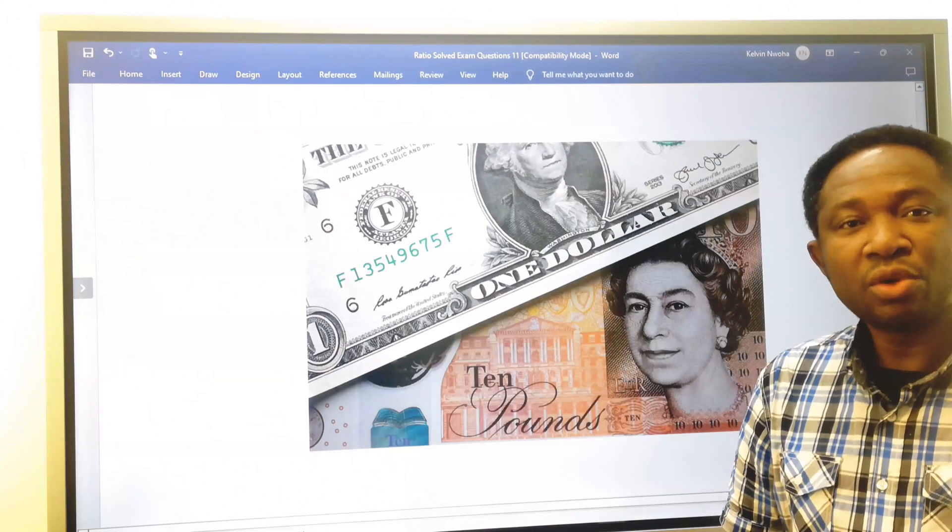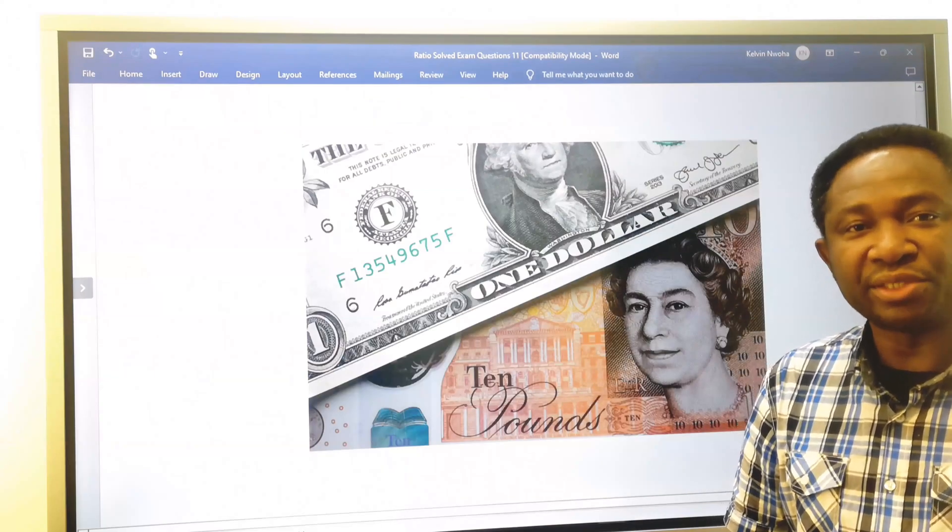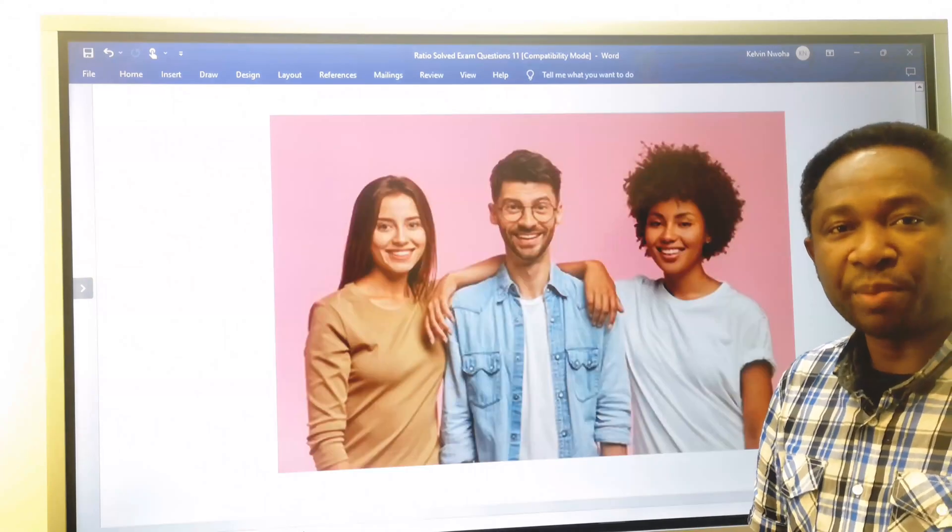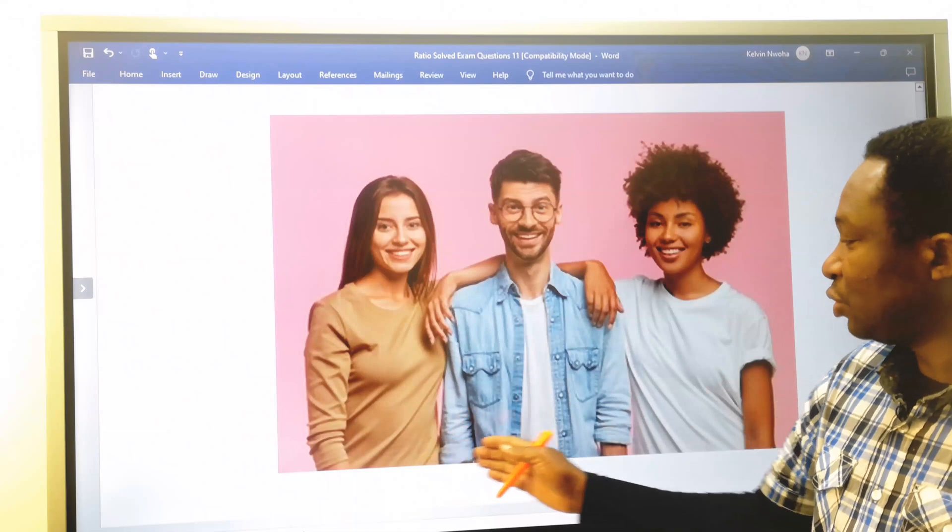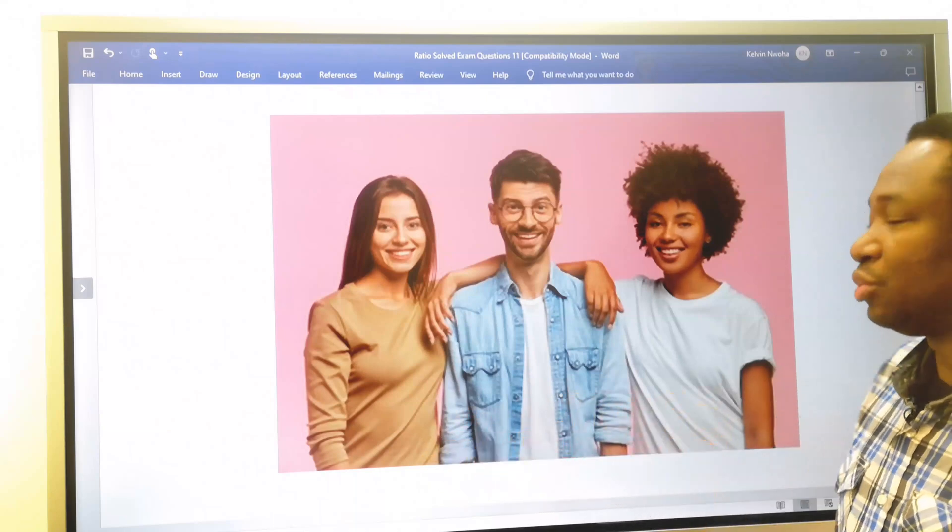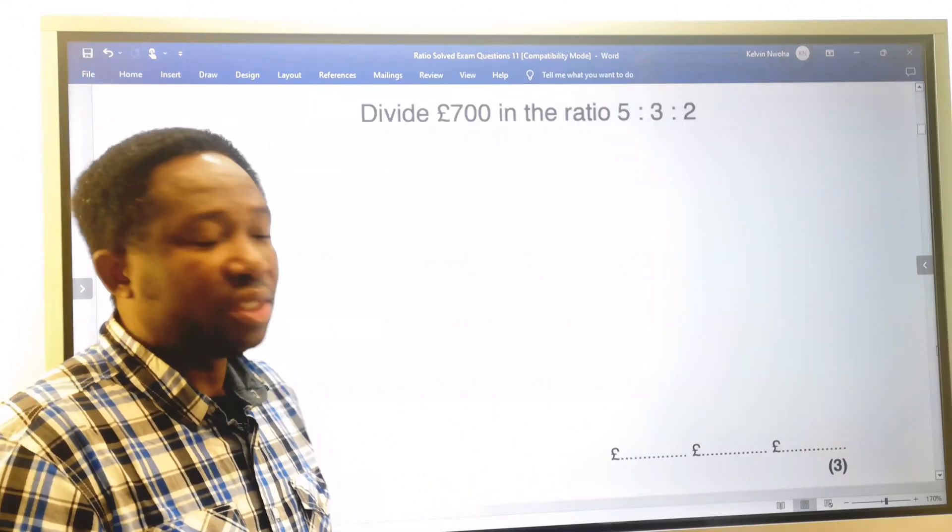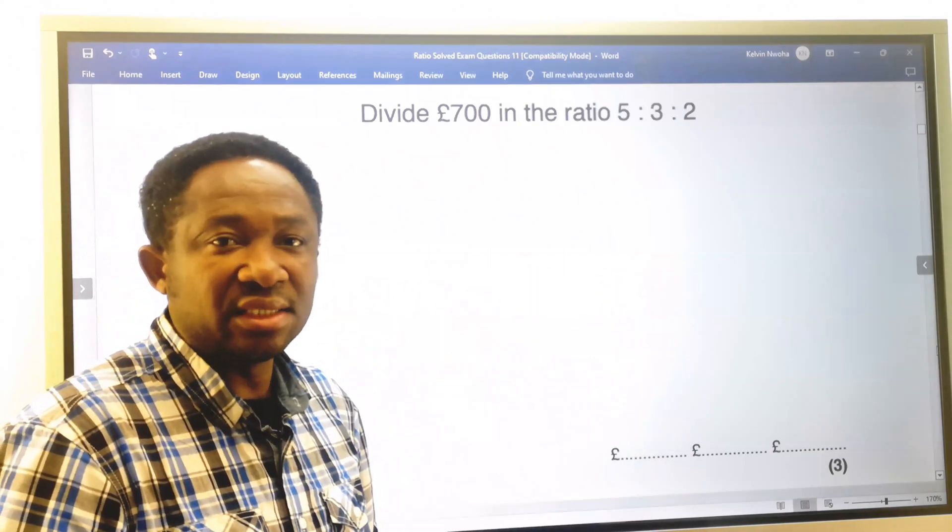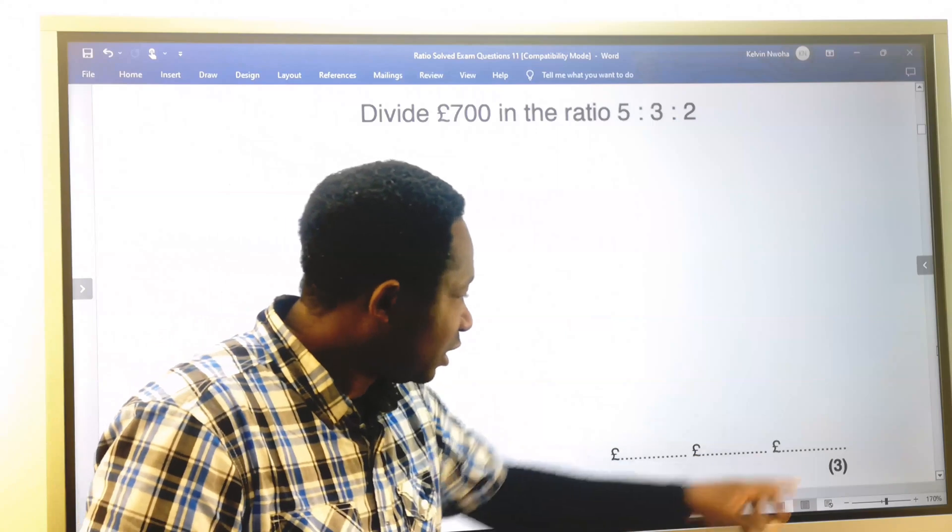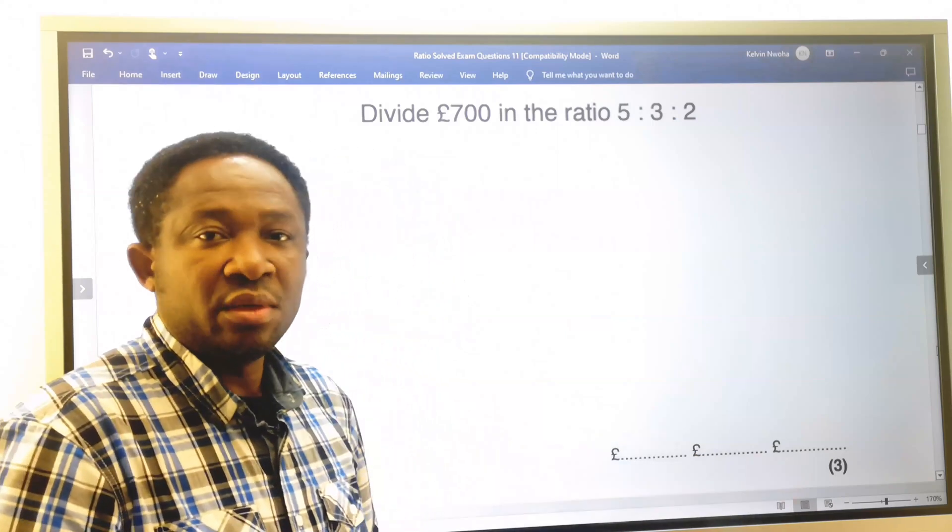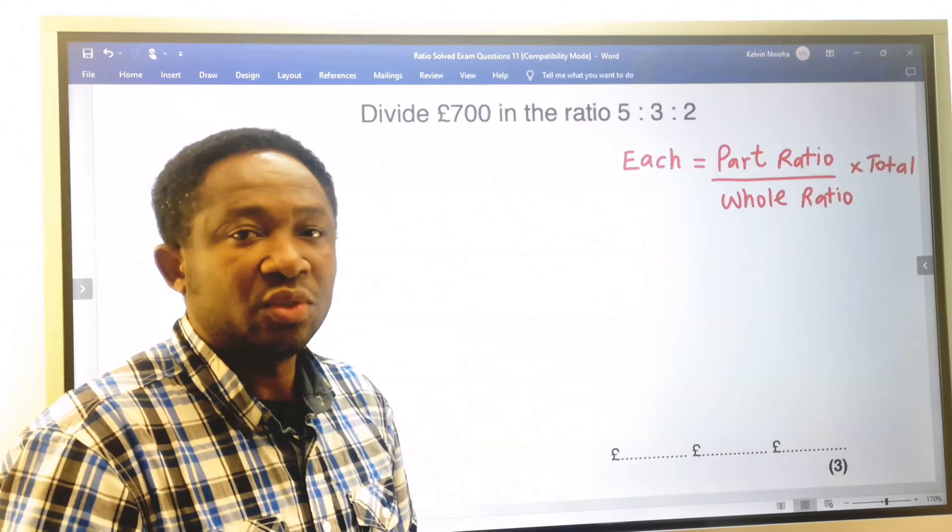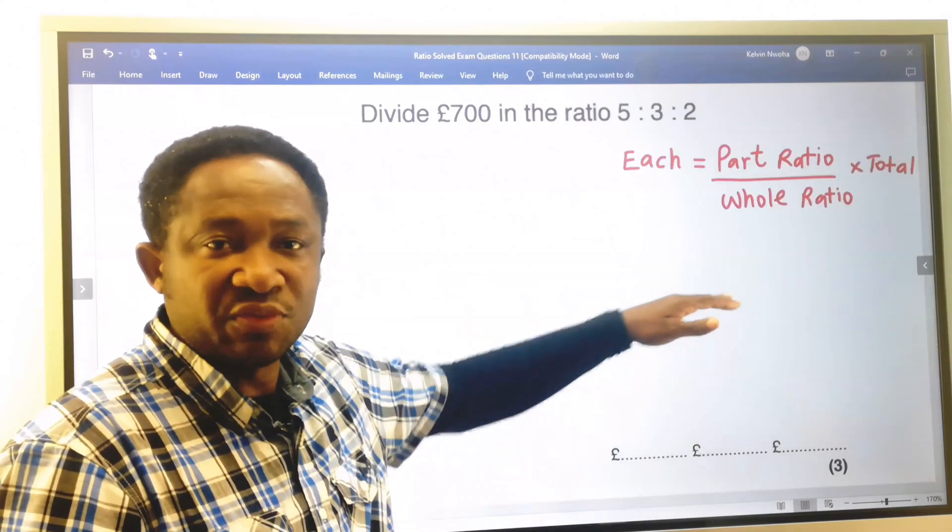This question has additional information. Money will be shared among 3 people in the ratio of 5 to 3 to 2. You are going to use the space provided and your final answers will be written in this space provided. Because of the additional information given to us in this question, we are going to use this formula.